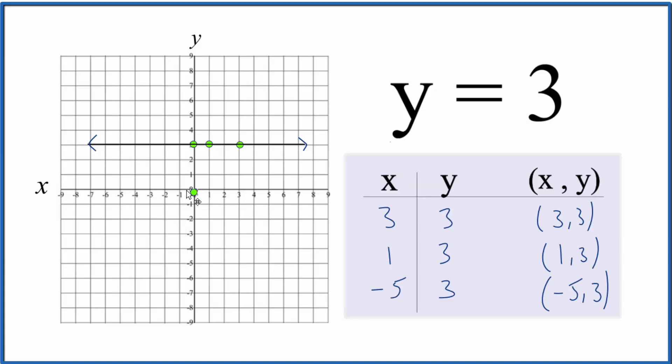And finally, x is negative 5, y is 3. All those points fall on our line. So this is the correct graph for y equals 3. This is Dr. B. Thanks for watching.